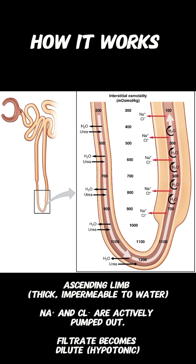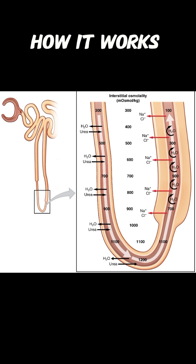When it moves to the ascending limb, sodium chloride is absorbed, which then dilutes the urine. This is known as the countercurrent mechanism.